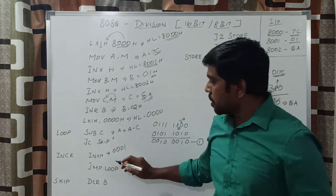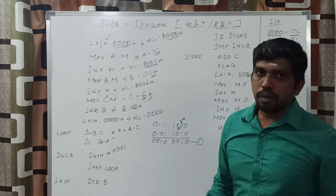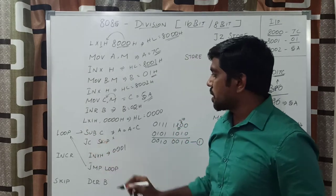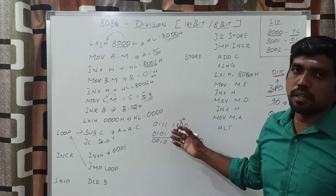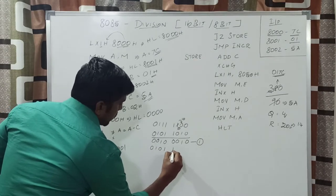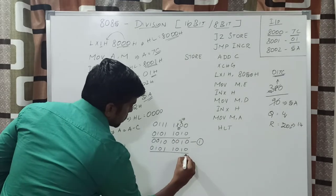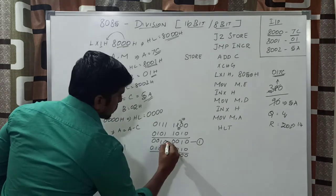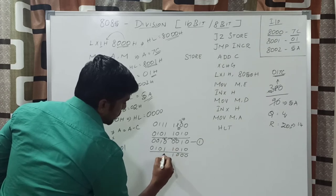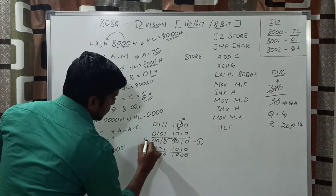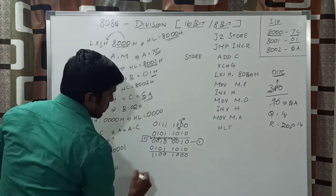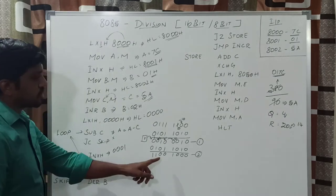The program counter points to the loop instruction, which says SUB C. Once again, you subtract whatever value is present in the accumulator with the C register content. The C value is 5Ah. Subtracting 22h minus 5Ah, a carry is produced. In the second iteration, you get the result C8h. Now you check the condition JC skip — the subtraction produces a carry, so the condition is true and it goes to skip.